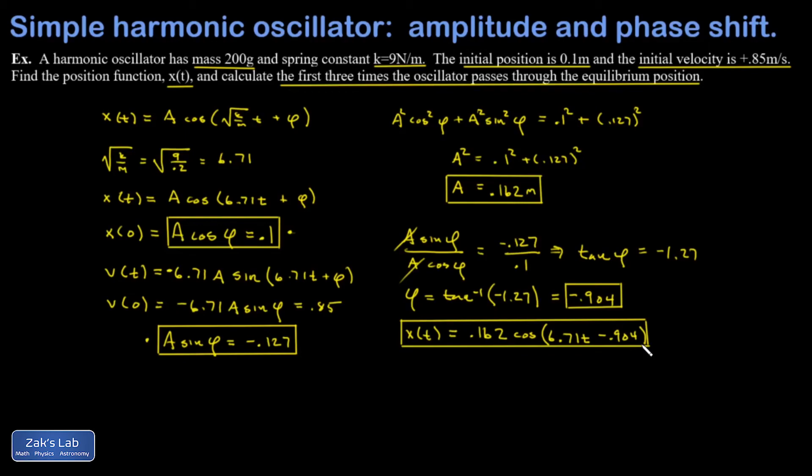So let's get to this tricky question. Give me the first three times the oscillator passes through the equilibrium position. Well, in this phase angle form of the general solution, it's not hard to see where the zeros are.